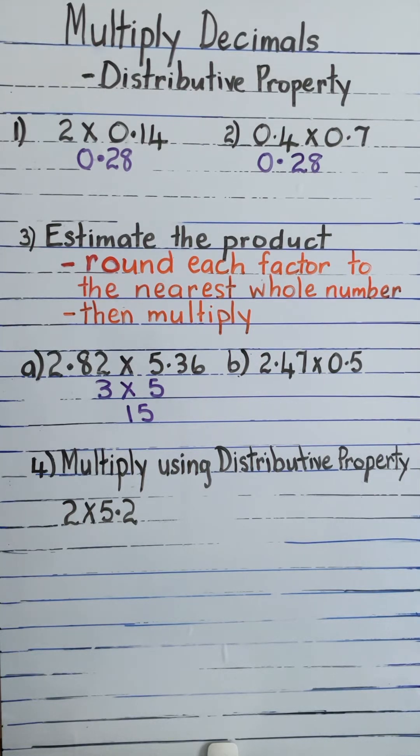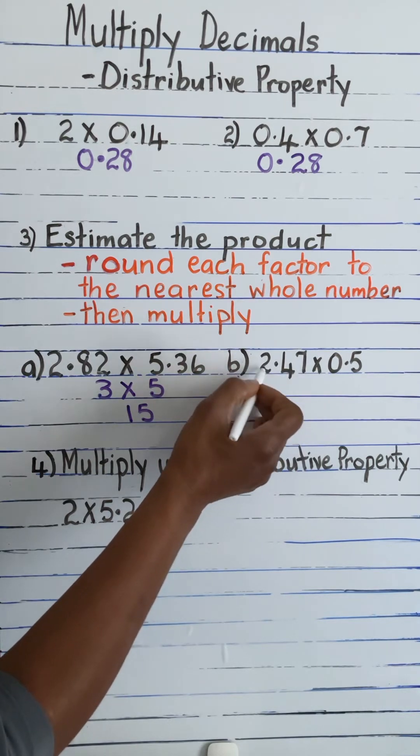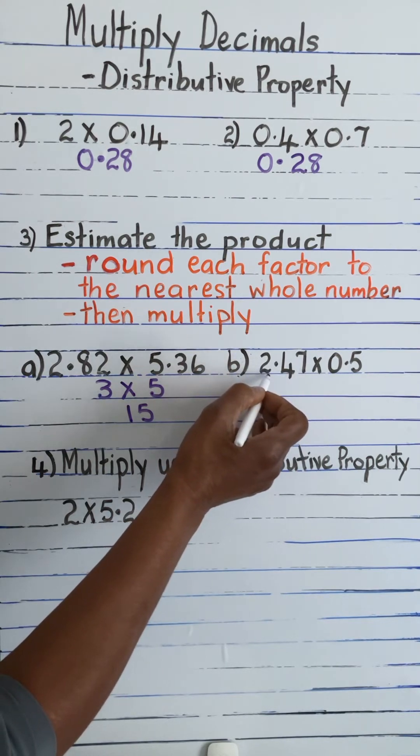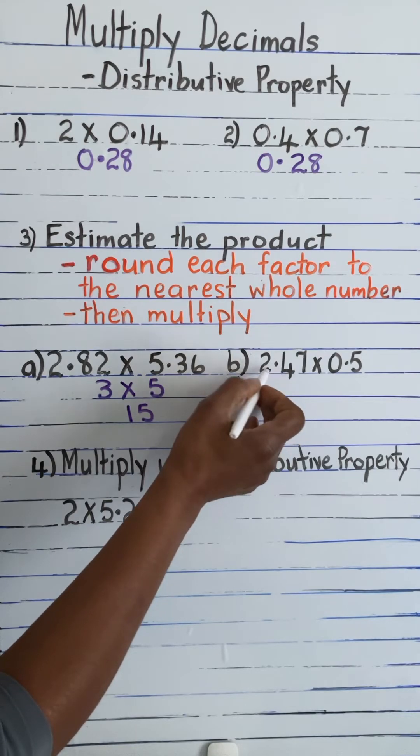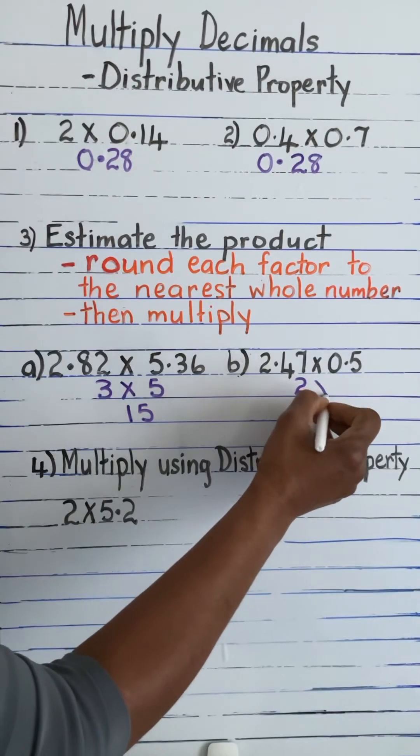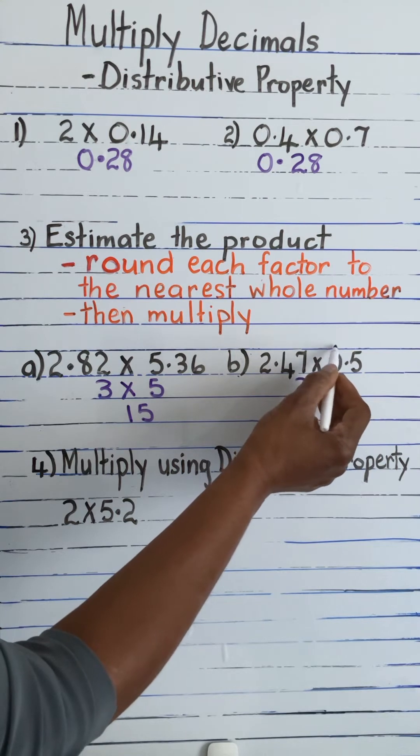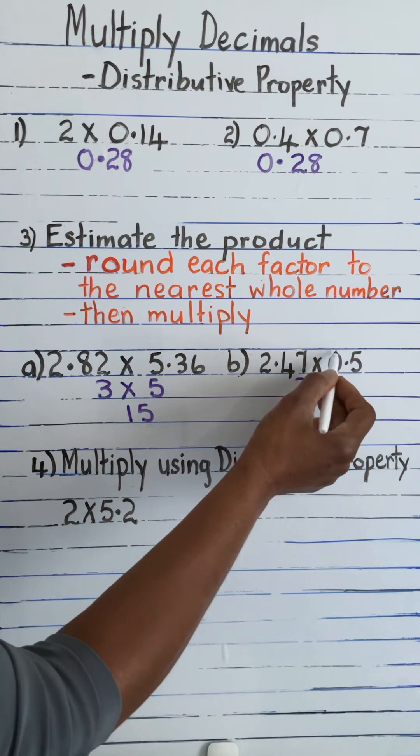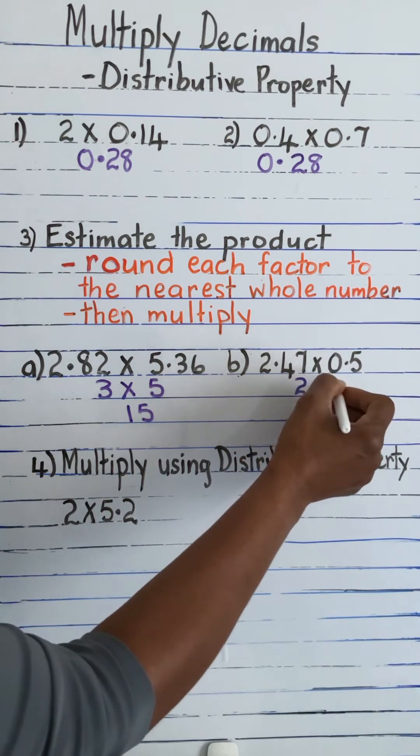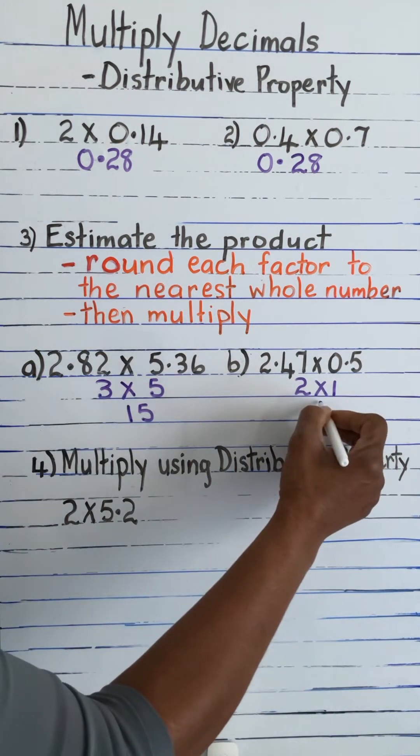Next, 2.47 and 0.5. 2.47, 2 is a whole number. The next digit is less than 5, so we're going to keep the rounded number, which is 2. In this one we have a 0 in the whole number place and this here we have a 5, so we add 1 to the rounded number: 1 plus 0 is 1. Now we multiply: 2 times 1 is 2.